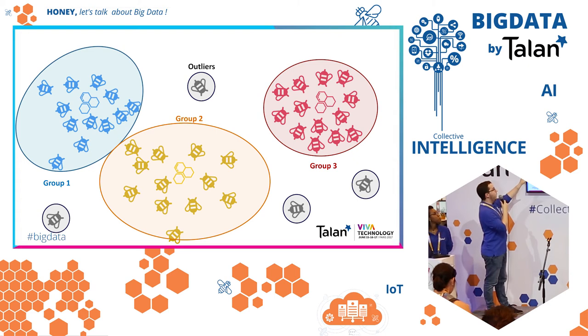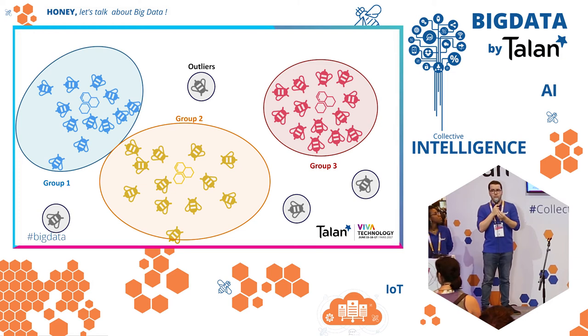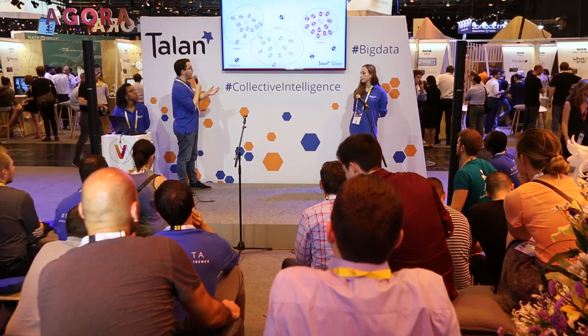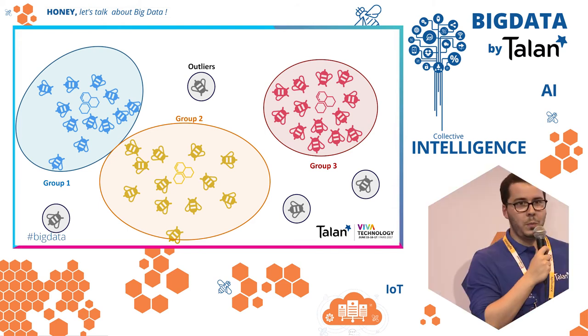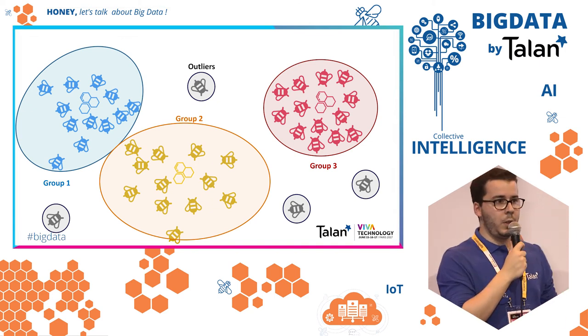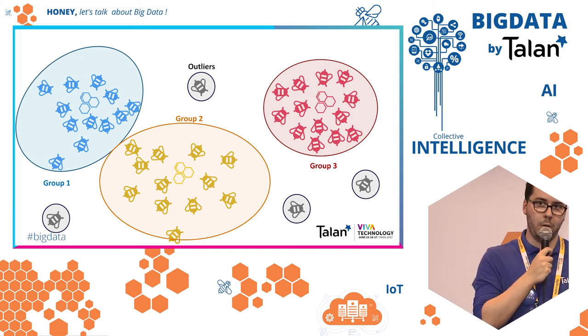The algorithm has created three groups: the blue group, the yellow group, and the red group. They are grouped because those bees share common characteristics — just as with clients, you want to know what your customers have in common. The black bees are unusual — they have no team. They are considered outliers and are not assigned to any group. Our algorithm detects these unusual cases and places them in an outlier category.